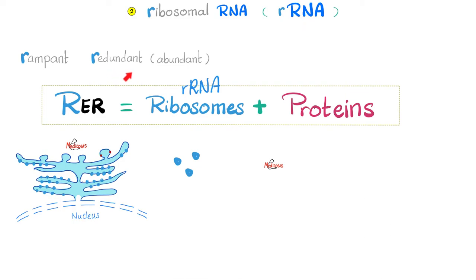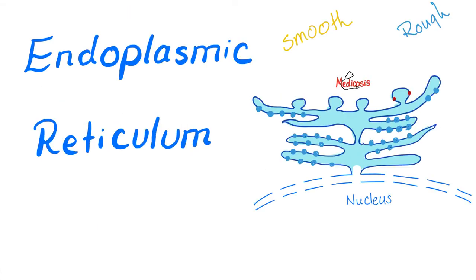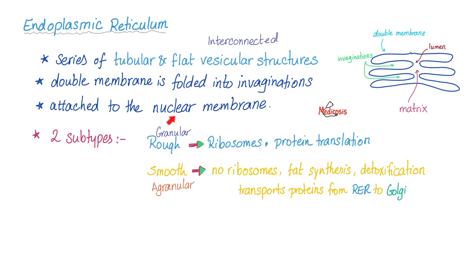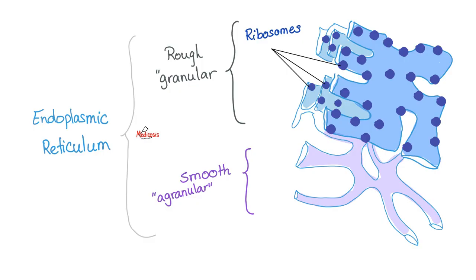Next, ribosomal RNA, the most abundant RNA type. Never ever forget this Medicosis equation. The rough endoplasmic reticulum equals ribosomes plus proteins. What does the ribosome have? Ribosomal RNA. If you want to learn more about the endoplasmic reticulum, check out the video titled Endoplasmic reticulum in my biology playlist. Endoplasmic reticulum could be rough or smooth. Rough is for translation, which means protein synthesis. Why is the rough rough? Because of the ribosomes. The ribosomes is giving it its granular shape. Function of the rough endoplasmic reticulum is protein synthesis or translation of mRNA into proteins. This is the rough endoplasmic reticulum, which has ribosomes, which have rRNA. And this is the smooth endoplasmic reticulum. No ribosomes and no rRNA.